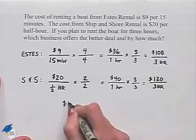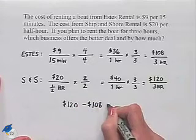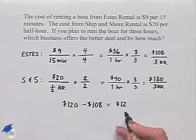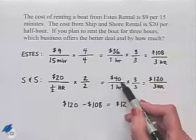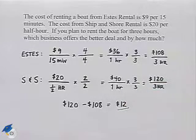And now we take the difference. $120 minus $108 gives us a difference of $12. By the way, this should make sense. We notice that it's $4 per hour difference. We multiply by three to give us the $12 per hour difference.